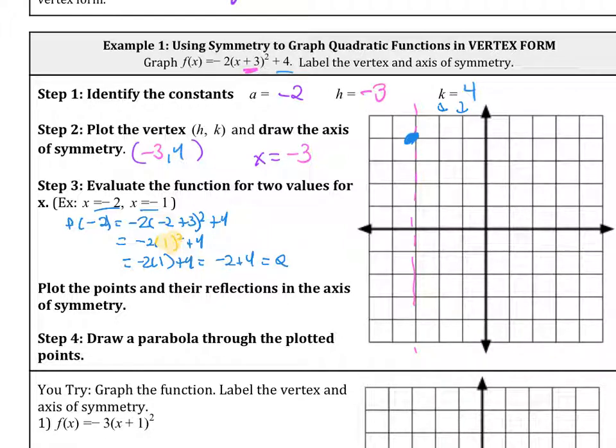Therefore, we know that if we plug in negative 2, we get a positive 2. So left 2, up 2. We can use the axis of symmetry to reflect that. If it's 1 away from the axis of symmetry, it's 1 away on the left side. And there it is.